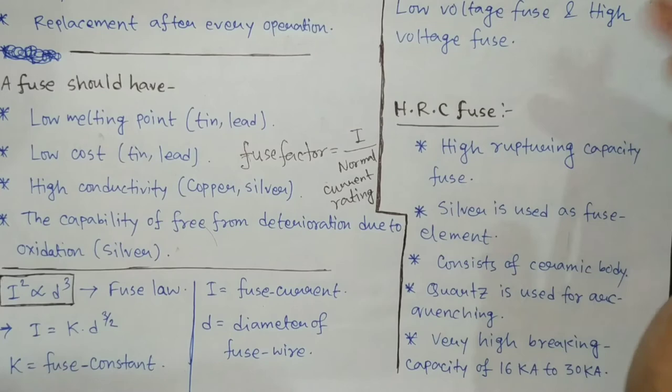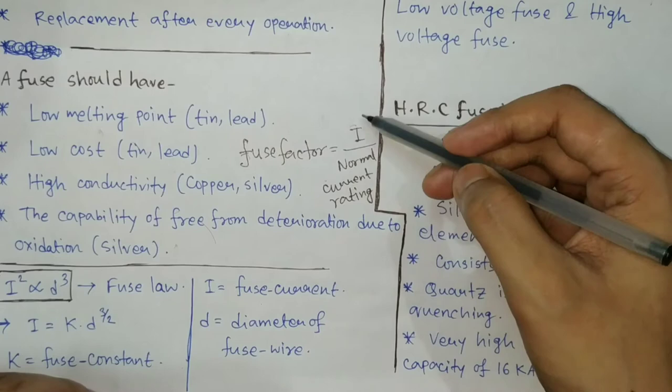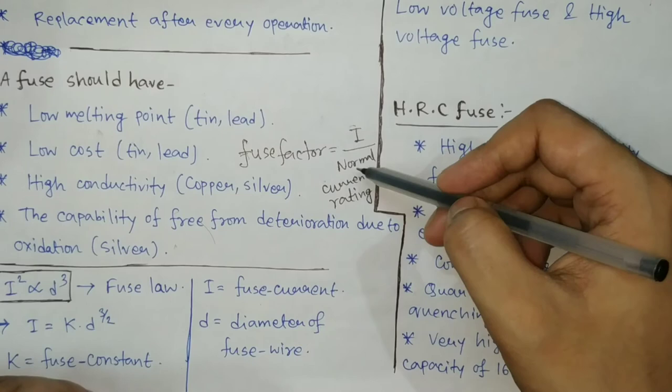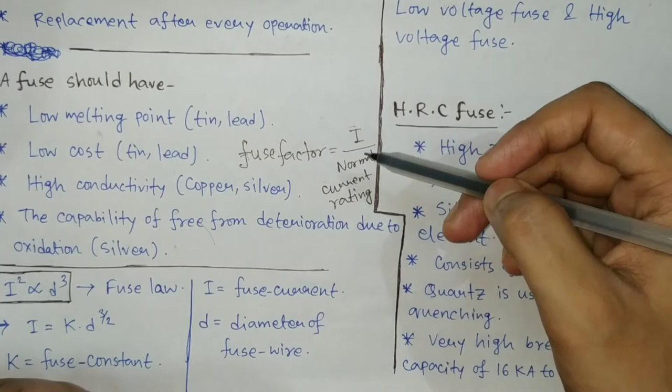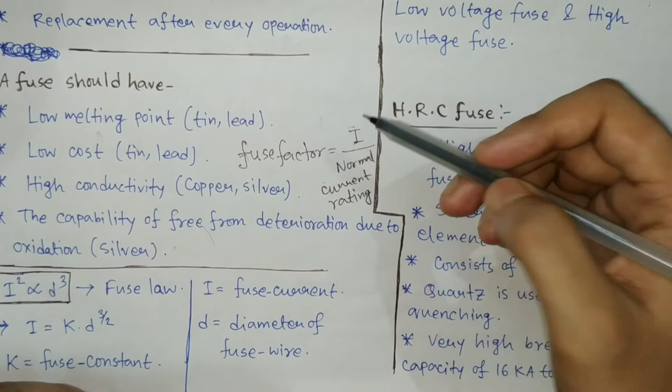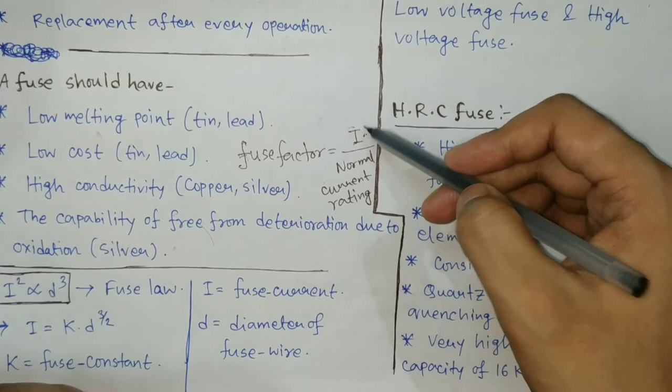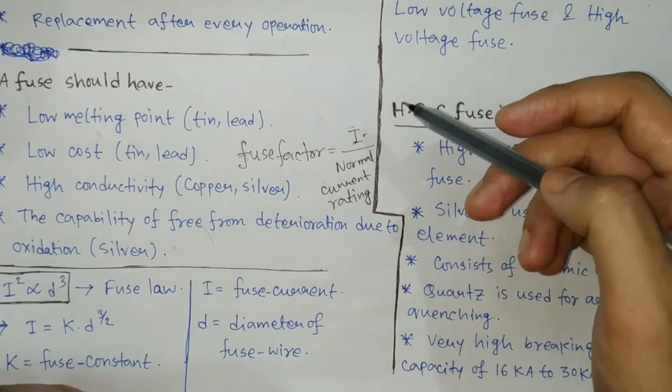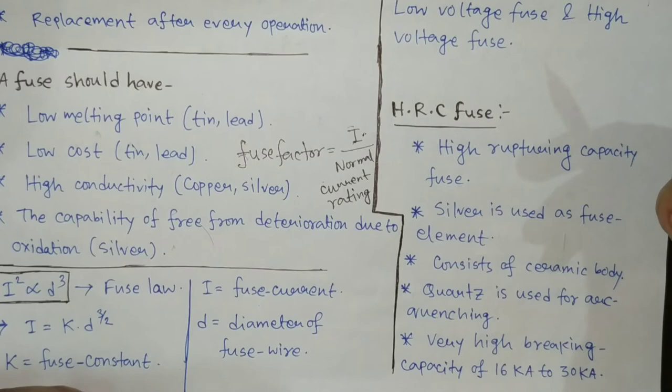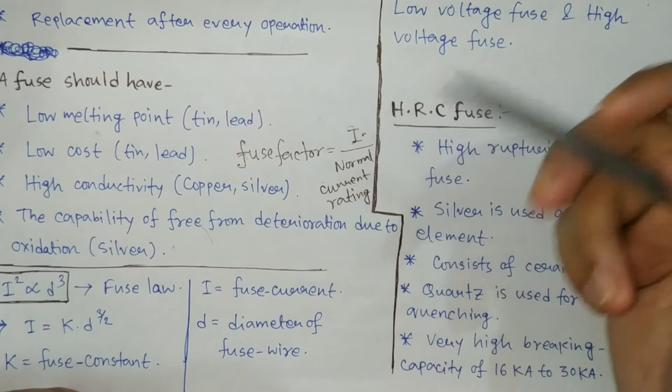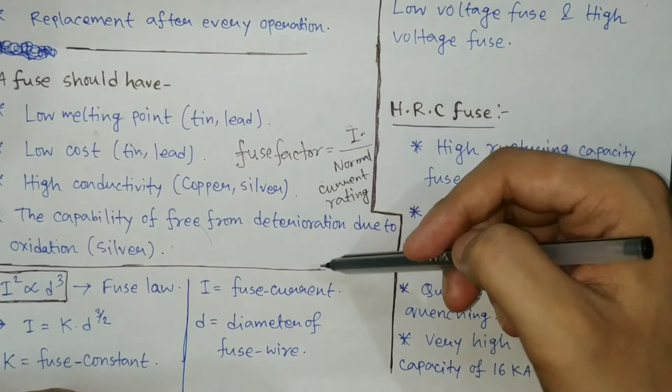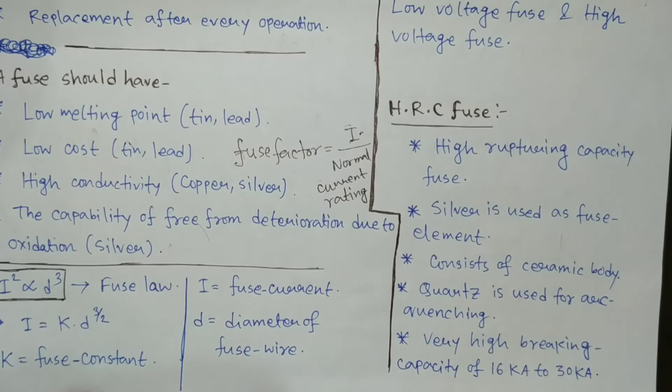Why should fuse factor be high? Suppose it is 1.5. That means I and the normal current are close to each other. That means even if the fuse is carrying a normal current, still there is a chance that the fuse may get overheated or melted. Because I and the normal current are approximately close to each other, there is a chance of deterioration. That is why it is always preferable that fuse factor is as high as possible.